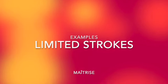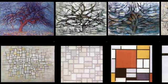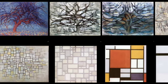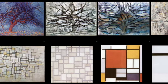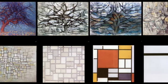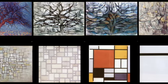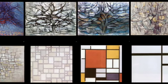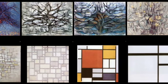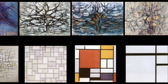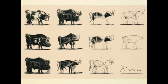Some examples of limited stroke approaches. This is Mondrian. He goes from a realistic tree, breaks it down simpler and simpler until he ends up with just the primary colors and black and white lines. Picasso does the same thing with bulls, from a realistic drawing to a very simplified essence of bull.